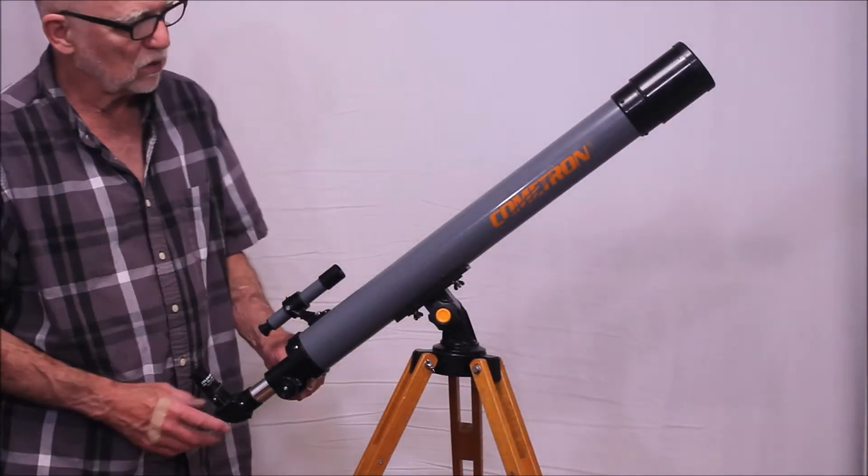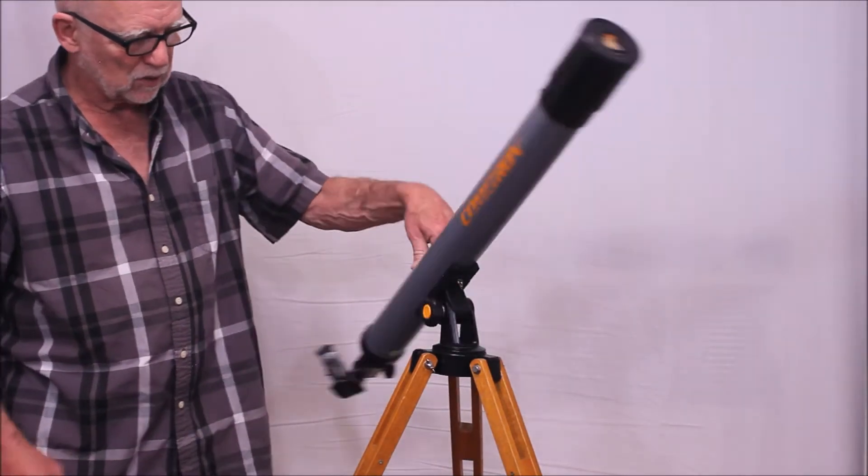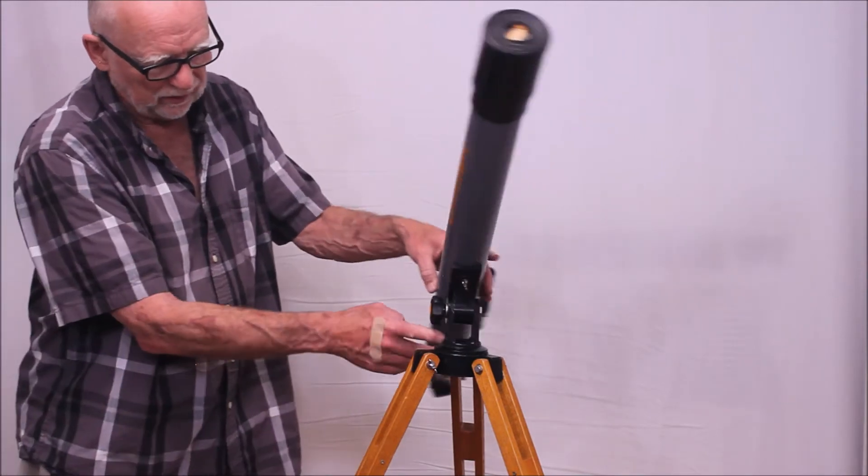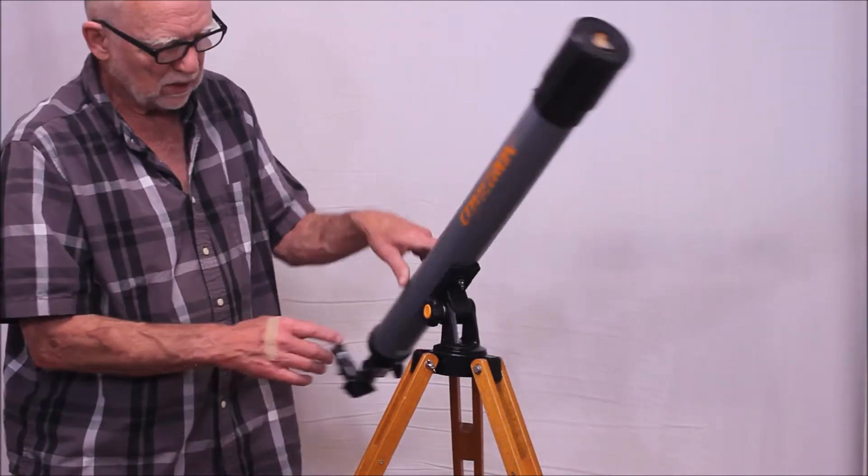Okay, let me show you how the scope operates. This has got to be one of the simplest Altaz mounts ever. It's got a simple bearing here. There's no lock on this, by the way, but it's nice and smooth. This is made of metal. Nice and smooth. Very, very effective in that regard.